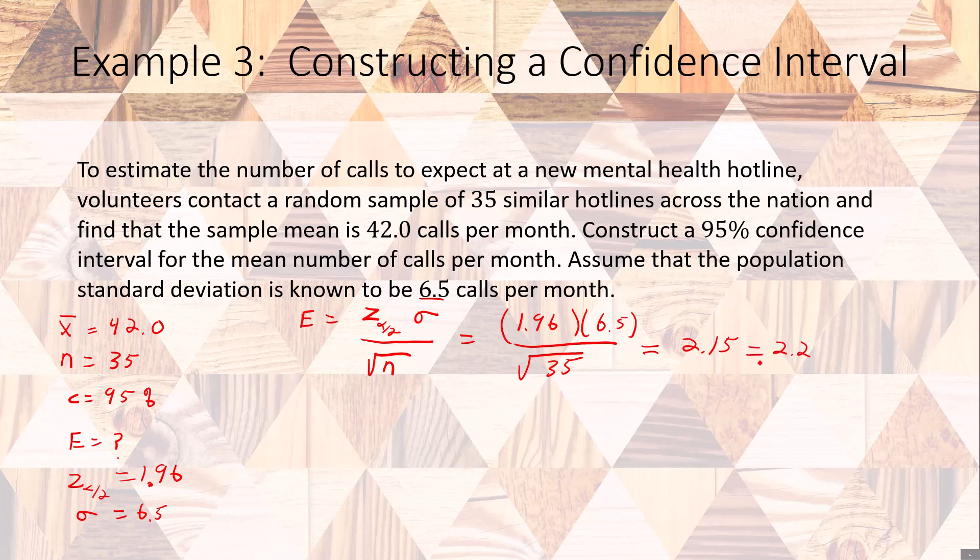So now we know our error, we know our sample mean, we can construct our confidence interval. The lower bound of our confidence interval is going to be X bar minus my error, which is 42 minus 2.2, which should be 39.8.